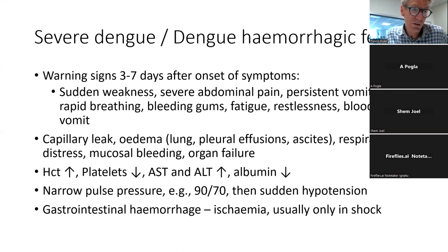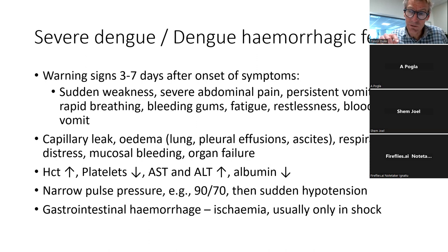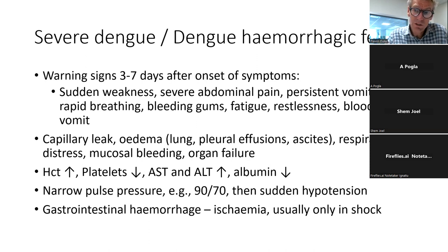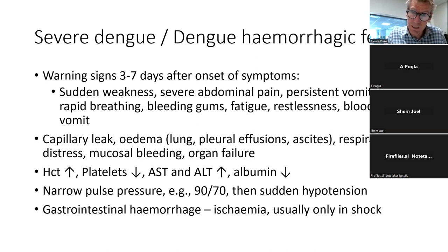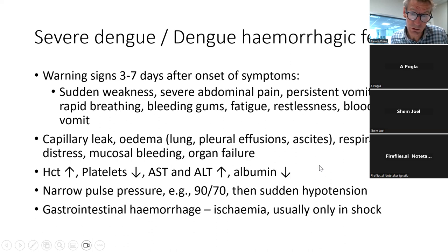Thrombocytopenia leads to gastrointestinal bleeding and bleeding at other sites, which is the basis of the positive tourniquet test. Transaminases of the liver often rise and serum albumin often falls — because capillaries leak serum and protein but not red cells — and also because of proteinuria. More than half of all children with severe dengue have proteinuria, similar to nephrotic syndrome. In some ways it can look like a very acute severe nephrotic syndrome with hemorrhage.